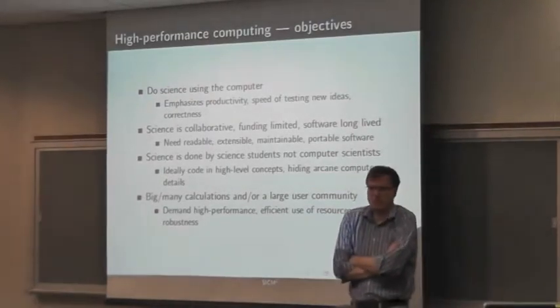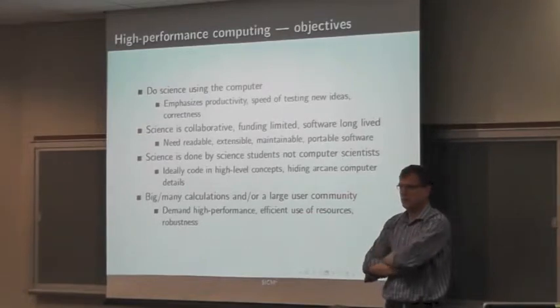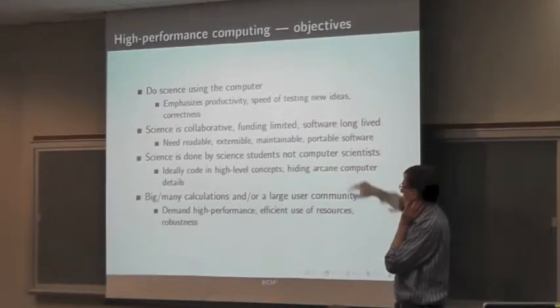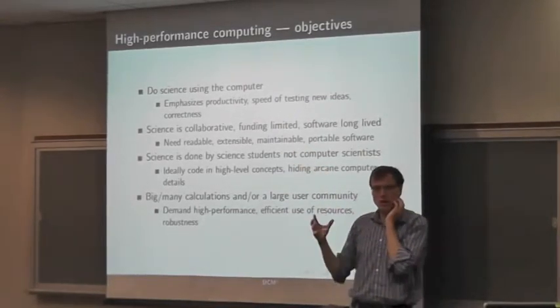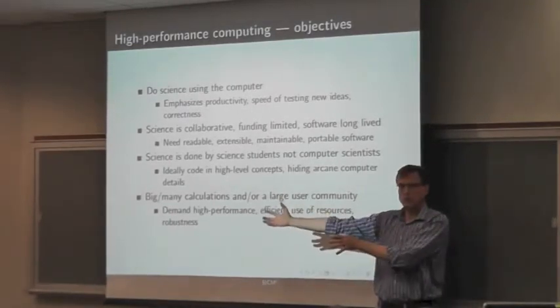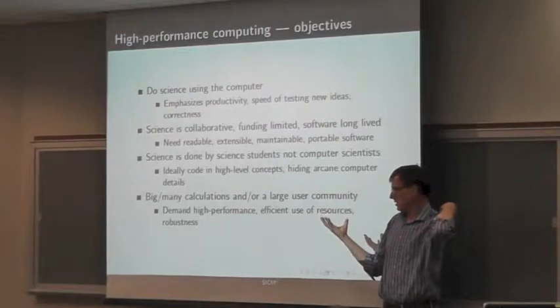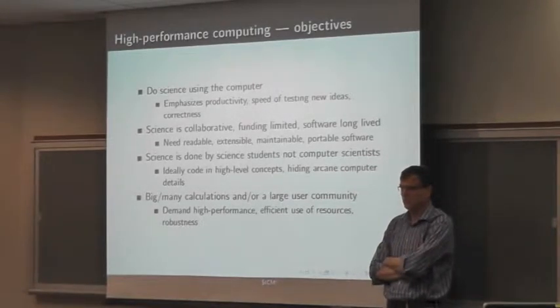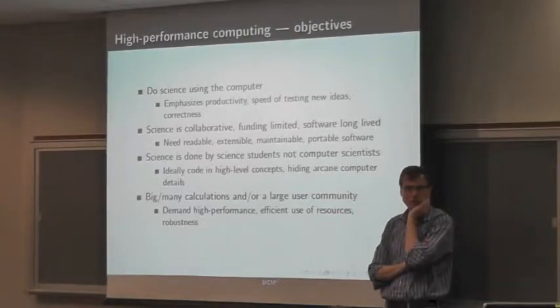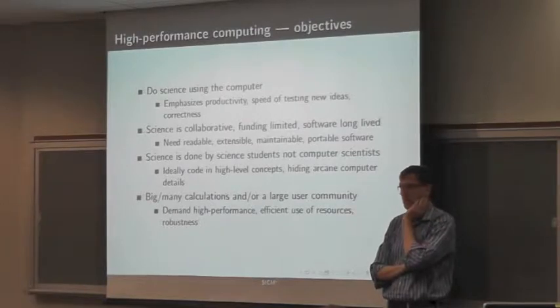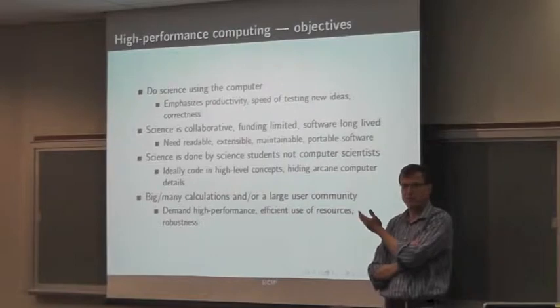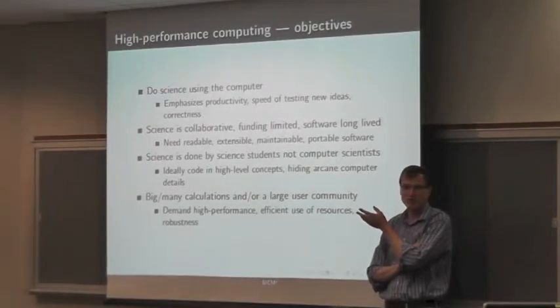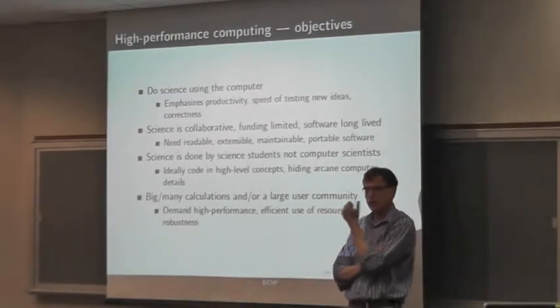And so computer codes get big. So how many of you use an ab initio chemistry code? Those codes are huge. Have you actually looked at the source code? There's a few million lines of code. So that immediately says that if you're developing software in these packages, you're automatically, in some sense, a software professional. And things like software engineering concepts end up being not things you have to pay lip service to, but things that are essential to life.